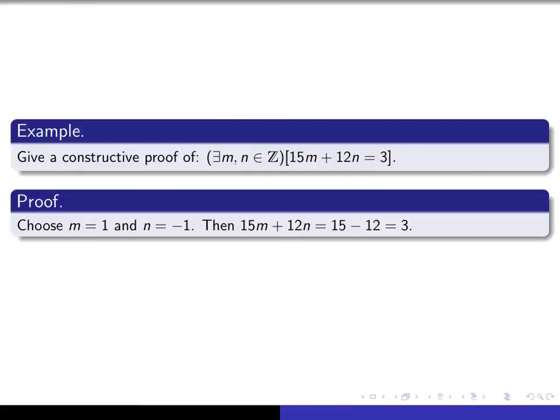The proof is choose m equal to 1 and n equal to minus 1. And then you just simply have to verify that this works. So you say then 15m plus 12n is equal to 15 minus 12, which is equal to 3. And there you have the proof.